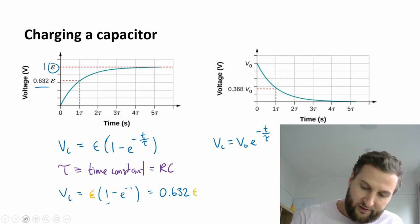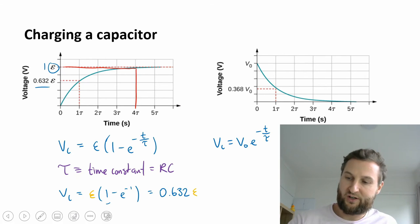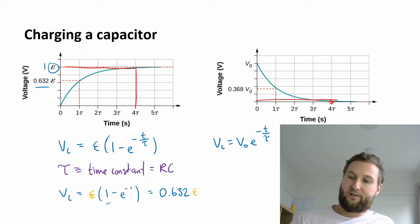And so after about 4 time constants, we're at 99% of the peak. And similarly on discharge, after about 4, we are almost at 0, so there's no charge left in that capacitor.